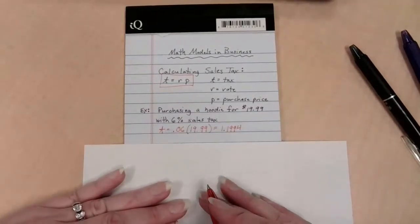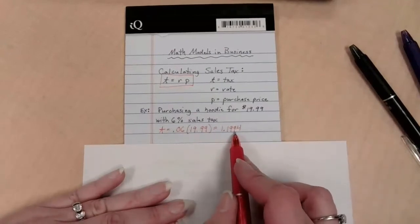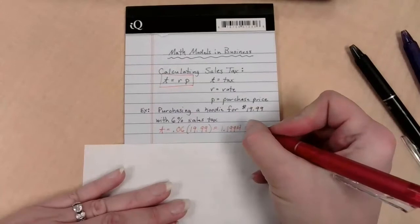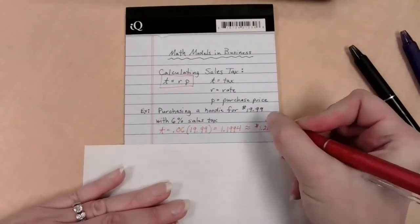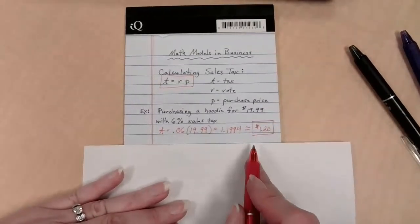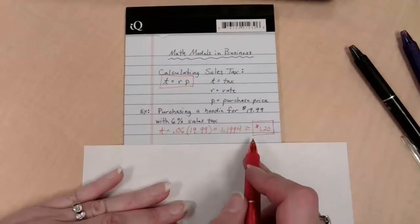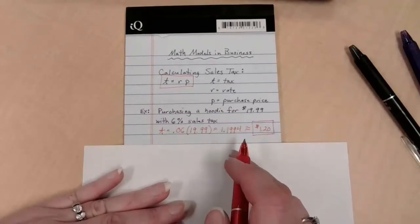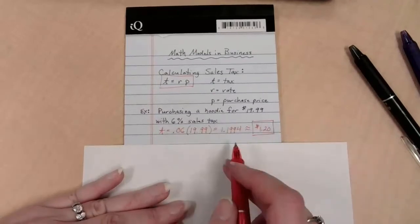Think about how this is going to turn out because of rounding purposes and because it's money. This is 1.1994. So what makes sense here? If we're talking dollars and cents, literally cents, it's going to round to 20 cents. And so we're going to call this approximately $1.20. Now keep in mind, we are not paying $1.20 total. We are paying $1.20 in tax on top of the $19.99.